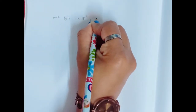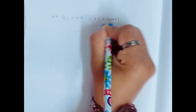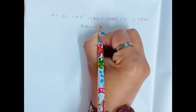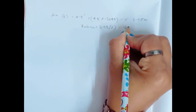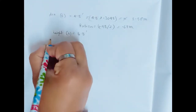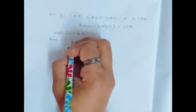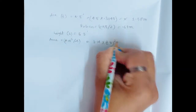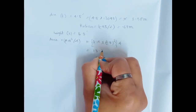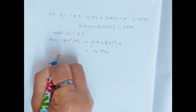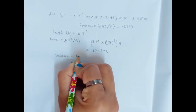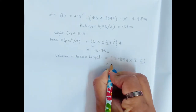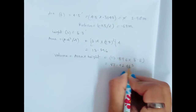Now we have to insert the water tank. The diameter of the water tank is 4.5 feet, which is 4.5 × 0.3048 = 1.98 meters, so the radius will be 1.98 ÷ 2 = 0.99 meters. The height will be 5.5 feet. The area will be π × d² ÷ 4, which equals 3.14 × 4.5² ÷ 4 = 15.896 square feet.